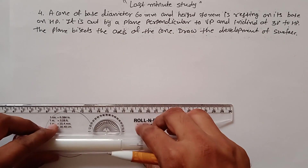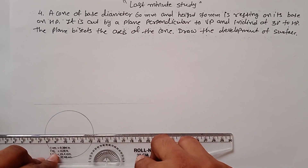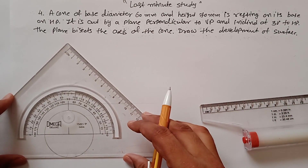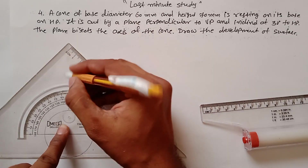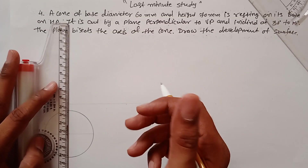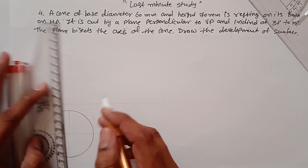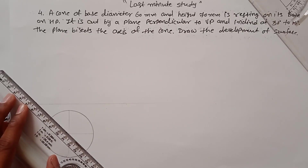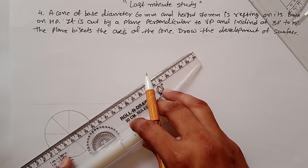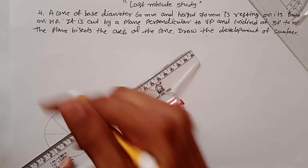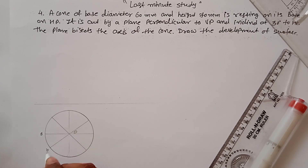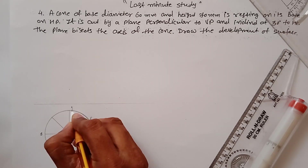Divide the circle into eight equal parts — you can also divide it into twelve equal parts. Mark 45° intervals. Give names to the points: this point is O, and going around: A, B, C, D, E, F, G, and H.